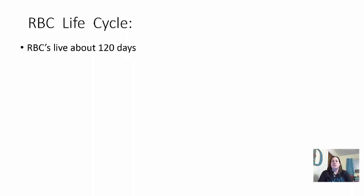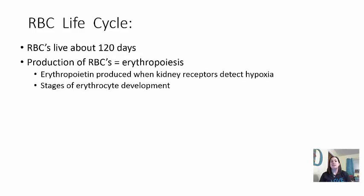Red blood cells live approximately 120 days. Production of red blood cells is called erythropoiesis. Erythropoietin—the hormone discussed earlier—is produced when kidney receptors detect hypoxia, meaning a decreased amount of oxygen. Because red blood cells are the ones carrying oxygen, if there aren't enough of them, the body detects insufficient oxygen and triggers more production.